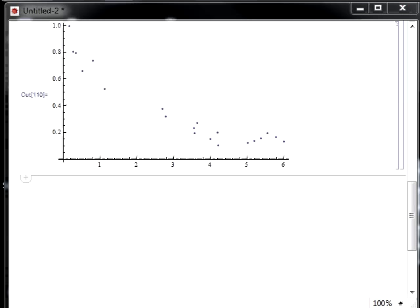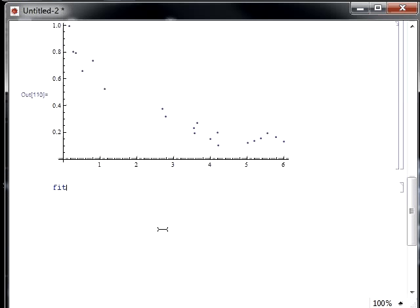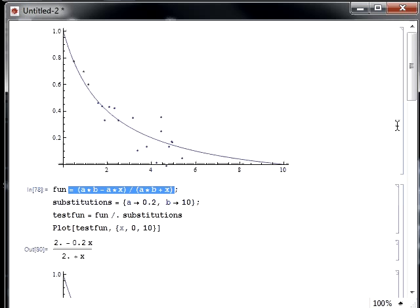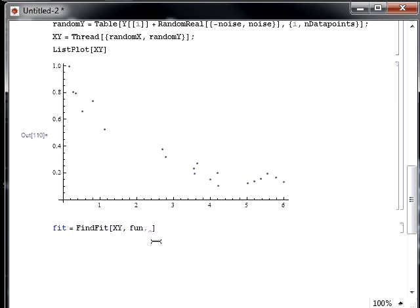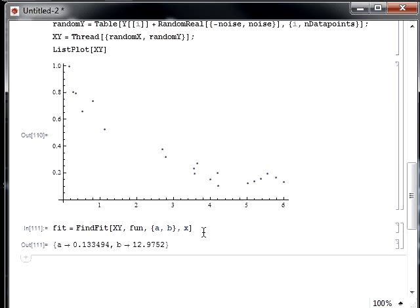So we start our fit just by defining a new variable called fit equals, and we'll use the find fit function. This is a neat function because it doesn't care the shape of the function. It can be linear or nonlinear. So we put in our x, y data. And then the function that we want to fit, remember, that function is at the top. This function we want to fit and find our coefficients a and b. So in brackets, curly brackets, we put the coefficients that we want to solve for. And then comma, the last variable is our independent variable, which is x. So that's going to find the fit. And it solved it. A is this value and b is this value.